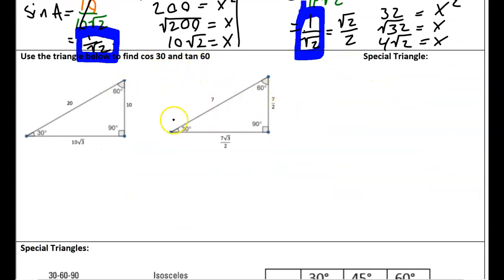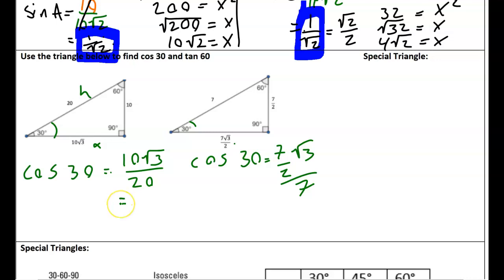Here, cosine of 30 and tangent of 60. Well, notice we have the same triangles again. So cosine of 30, we can use either triangle here. So cosine of 30 would be adjacent over hypotenuse, would be 10 square root 3 over 20, or would be 7 over 2 square root 3 over 7. And either way, these reduce to the same thing. Would be square root 3 over 2, and square root 3 over 2. So those are the same results. And if I do tangent, I'll leave that one to do on your own. But tangent of 60 would be the same for both triangles as well.